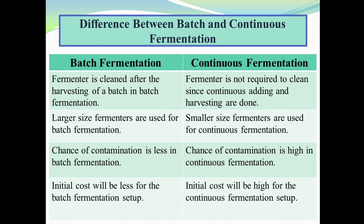The key difference is: in batch fermentation, fermentation is done batch-wise one after the other. While in continuous fermentation, the fermentation process never stops in between and it runs for a longer period of time, with the feeding of fresh media containing nutrients and harvesting of products at regular intervals.